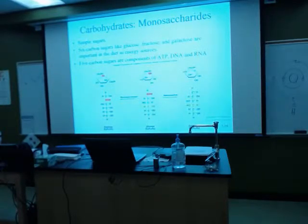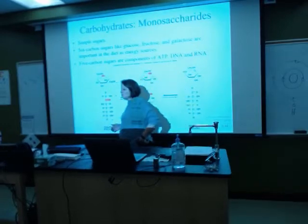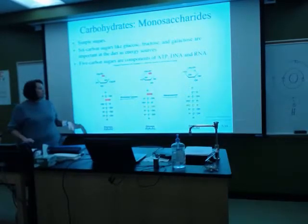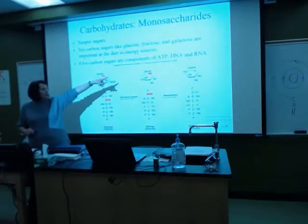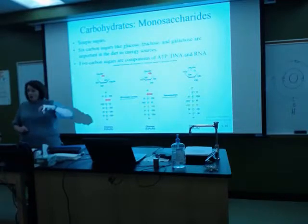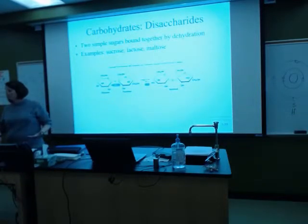Glucose is the simplest sugar that the body can use. But these other sugars are found in very important molecules such as our ATP, our DNA, and our RNA.